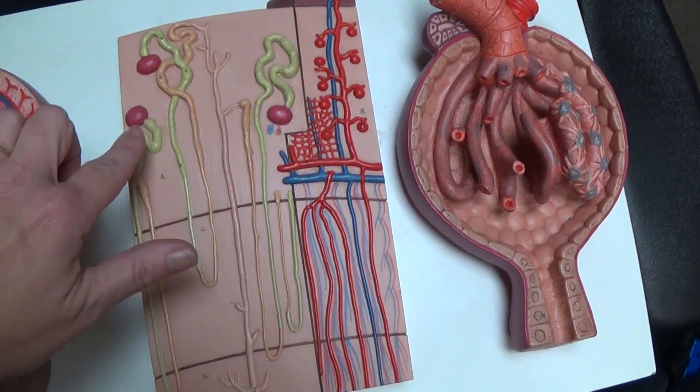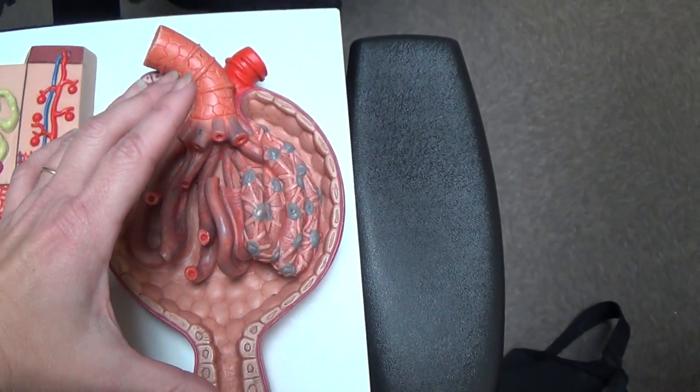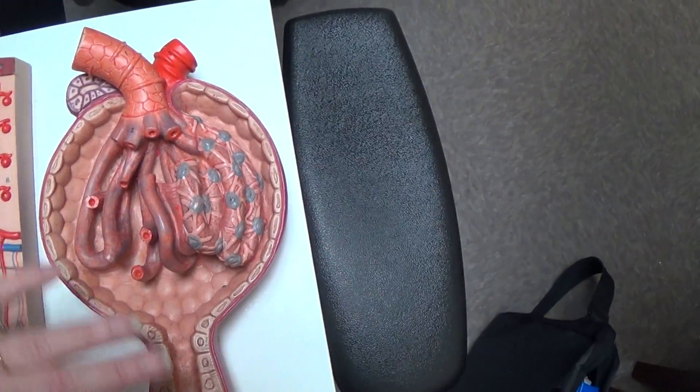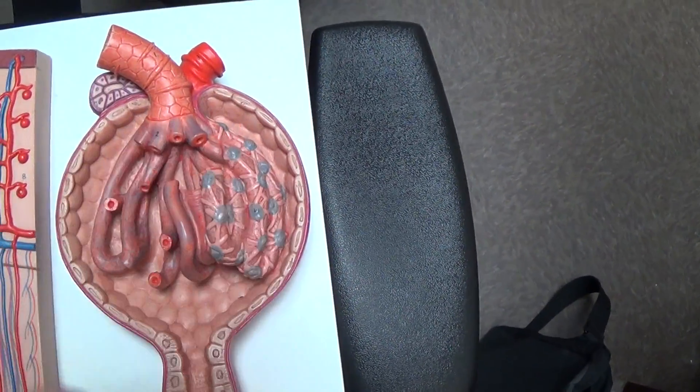And then we take an insert of one of these and it's right over here. So this is the nephron because all it is is part of a nephron right here.